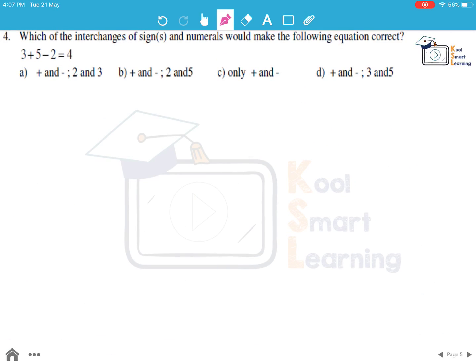Moving to the fourth question. Which of the interchanges of sign and numerals would make the following equation correct? So the given thing is 3 plus 5 minus 2 equal to 4. Now let's take the first option. If we interchange plus and minus and 2 and 3, instead of 3 we write 2 here, instead of plus we write minus, 5 and then plus and then 3. So this becomes 2 minus 5 is minus 3 plus 3. It becomes 0. So this is not equal to 4.